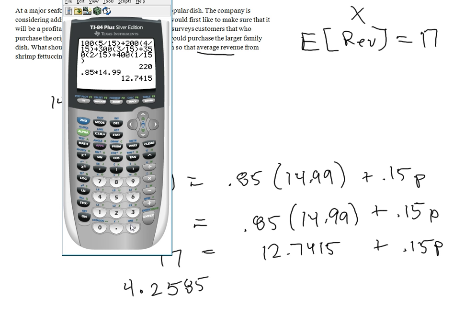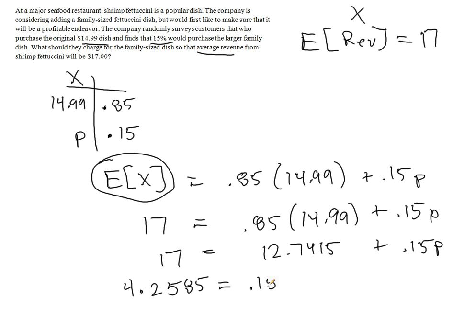Let's check it real quick. So 17 minus that answer, 4.2585, and that equals 0.15P.